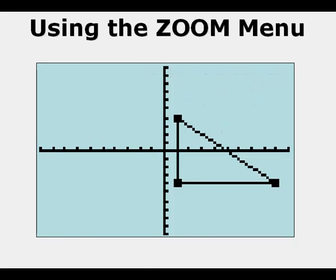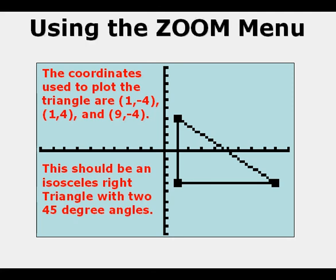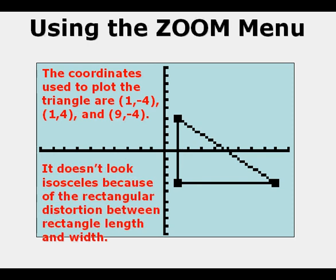Now I've drawn an isosceles right triangle. Now does it look like an isosceles right triangle? Well, the coordinates I used to plot here are 1, negative 4, 1, 4, and 9, negative 4. It should be, by those coordinates, an isosceles right triangle, but it doesn't look like it. And it should be a right triangle with two 45-degree angles. But it doesn't look like it's isosceles because of the rectangular distortion between rectangle length and width of a normal view screen.